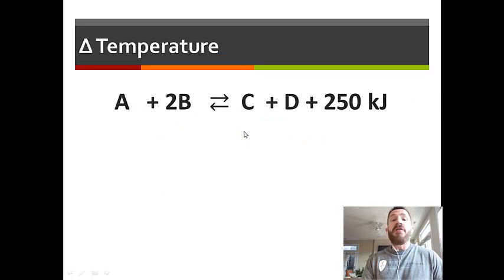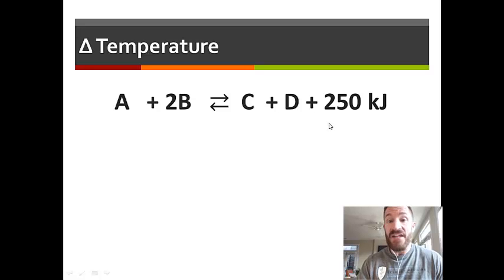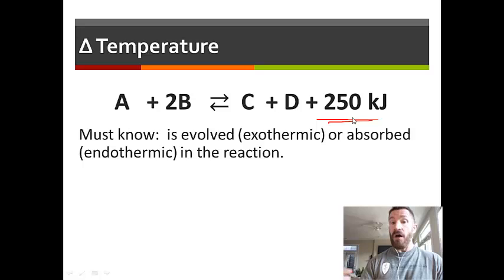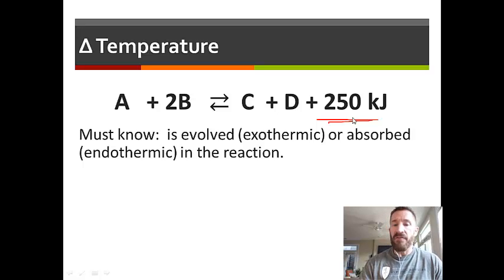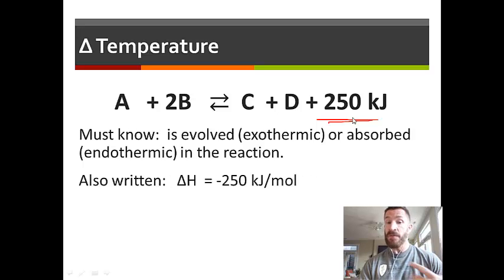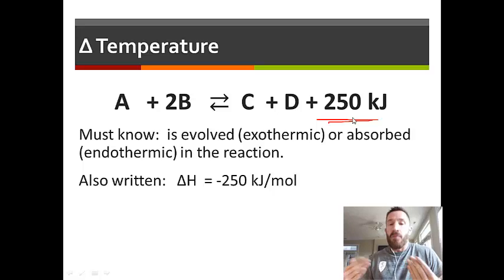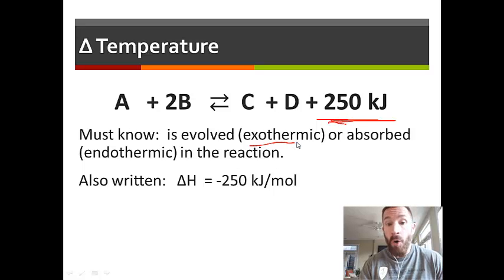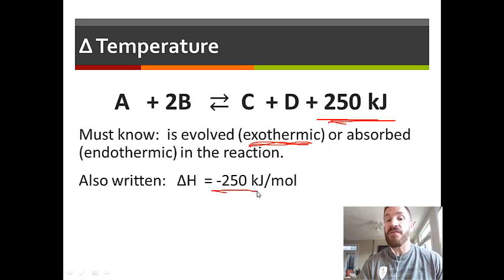The next stress is temperature. For temperature, the first thing you need to know is whether the reaction is endothermic or exothermic. Energy can be written as part of the reaction — if it's written as a product, the reaction is exothermic. You could also be told the delta H value: a negative delta H means exothermic, meaning energy is given off; endothermic means energy is absorbed. There are three ways you can be told about the energy process of a reaction.